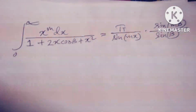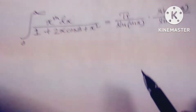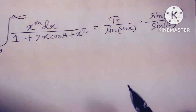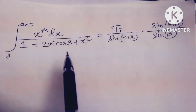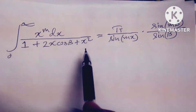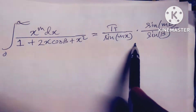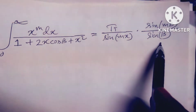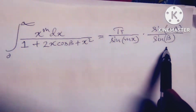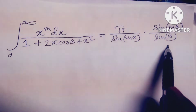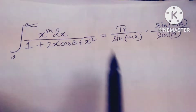Hello dear friends, today's discussion is the integral from 0 to infinity of x to the power m, divided by (1 + 2x cos β + x²), times π sin(mβ) / sin β. Friends, I will try to solve this problem.